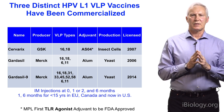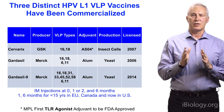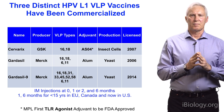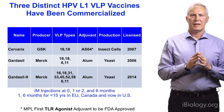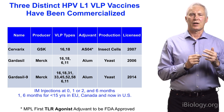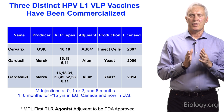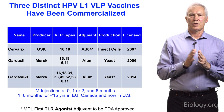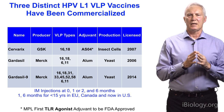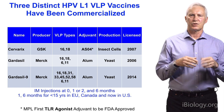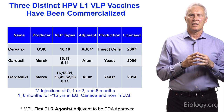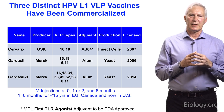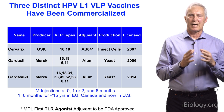Gardasil 9, more recently developed and now the most available vaccine in the United States, is nonavalent. In addition to the two types in Cervarix, it contains the five next types most often seen in cancer, and is otherwise formulated similarly. The production system also varies: Cervarix is made in insect cells, which was the system used in our preclinical proof-of-principle studies, whereas Gardasil is made in Saccharomyces cerevisiae, common bread yeast.